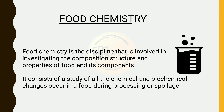Now I am going to give you a brief description of some main branches of food science and technology. As we all know, food is a very complex component. Food science is a discipline that is involved in investigating the composition, structure and properties of food and its components. It forms a major part of food science and consists of the study of all the chemical and biochemical changes that occur in food during processing or spoilage.